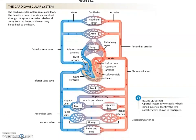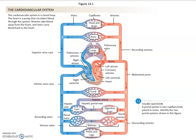Here is an anatomy overview and review for the cardiovascular system. The pulmonary circuit is between the heart and the lungs. Everything else is the systemic circuit — leaving the left ventricle, going to all the different body parts, and then returning to the right side of the heart.